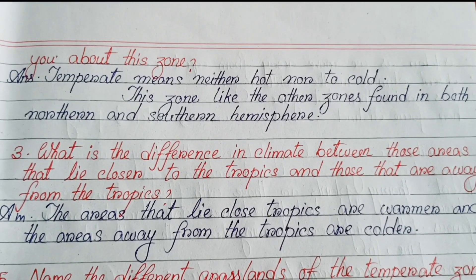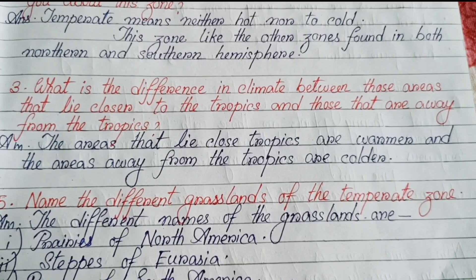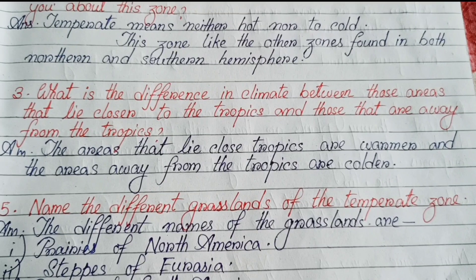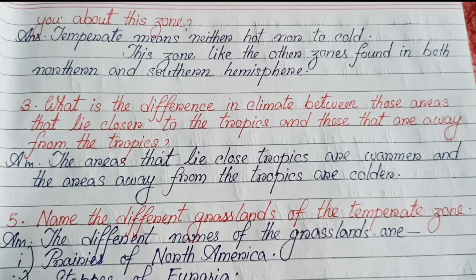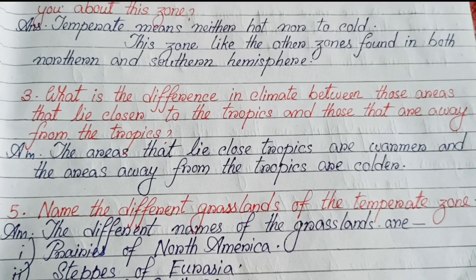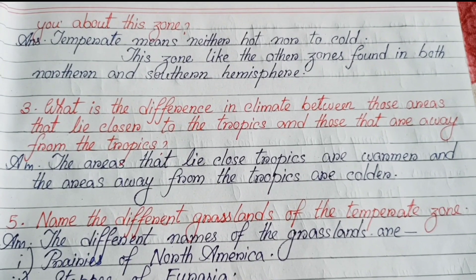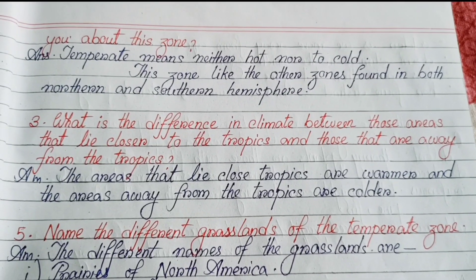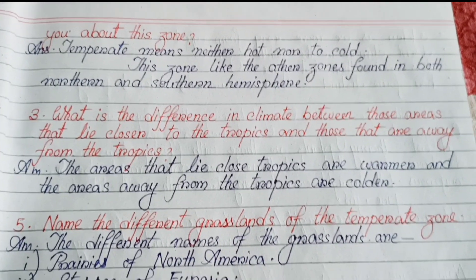Number three: what is the difference in climate between those areas that lie closer to the tropics and those that are away from the tropics? The areas that lie closer to the tropics are warmer, and the areas away from the tropics are colder.